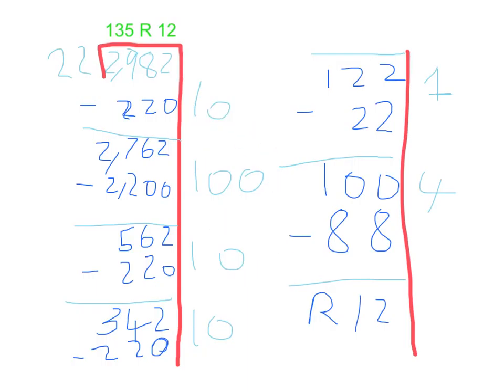Here there were 10 22s again, and 10 22s again. Then I took away 122, and that left me with 100. Then I took away 4 22s because that was how much was left.